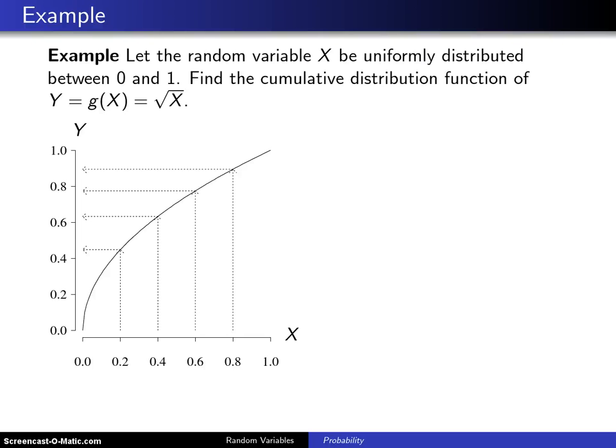Here is a first example of using the transformation technique. Let the random variable X be uniformly distributed between 0 and 1. Find the cumulative distribution function of the random variable Y, which is the square root of X.